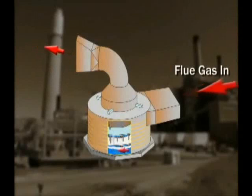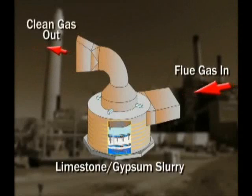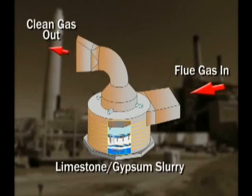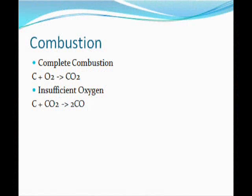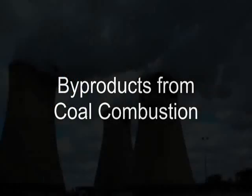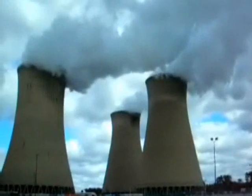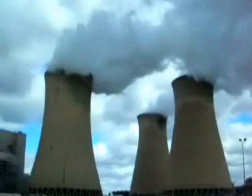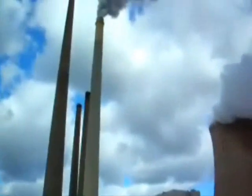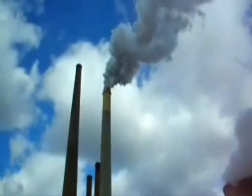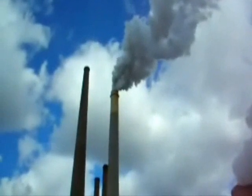Other byproducts occur from coal's combustion — chemicals and scrubbers are used for their reduction. NOx gases need to be contained, as well as SO₂, which causes acid rain. When insufficient air for combustion is supplied, instead of CO₂, we get carbon monoxide. Regarding byproducts from coal combustion: insufficient oxygen supply during combustion produces carbon monoxide. As the oxygen is depleted, the reaction becomes carbon plus carbon dioxide, producing two carbon monoxides.